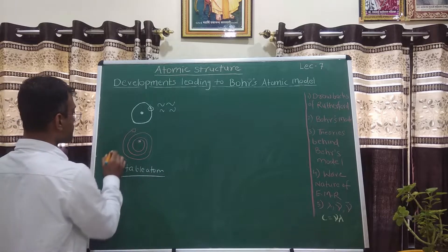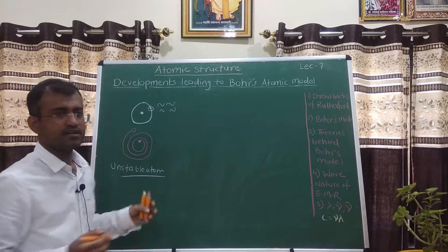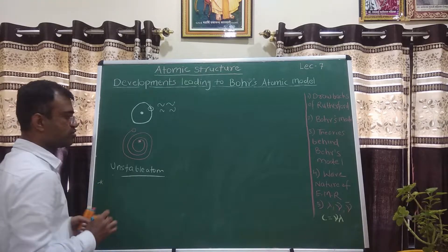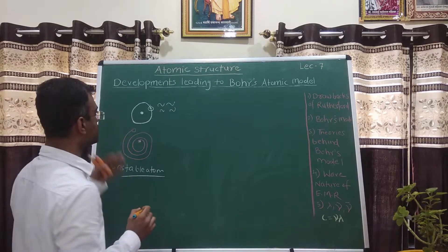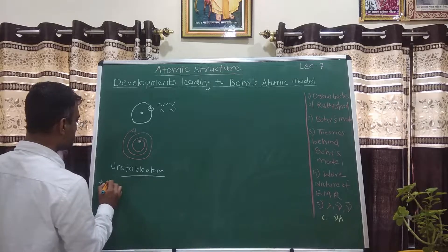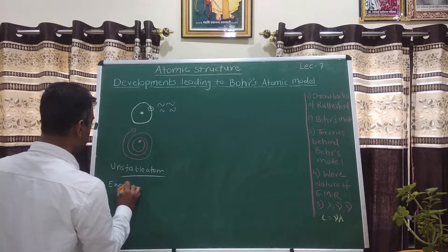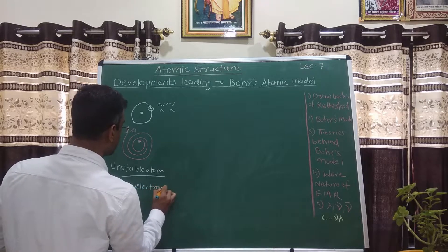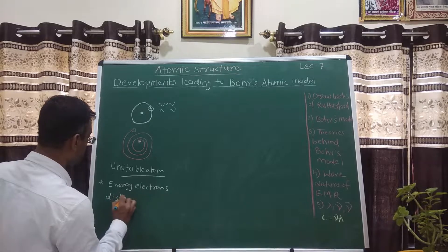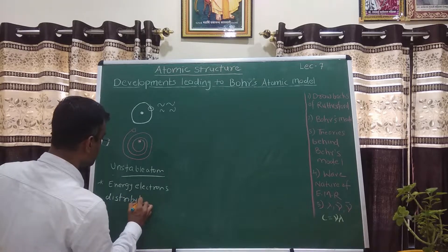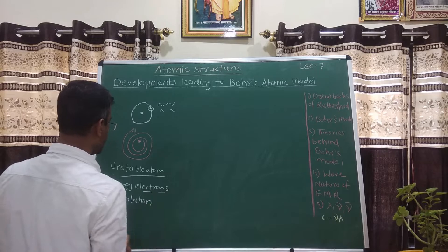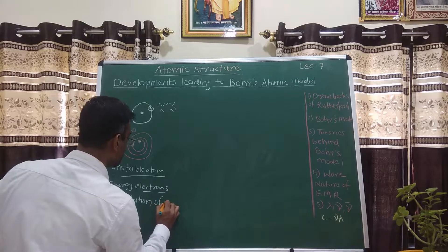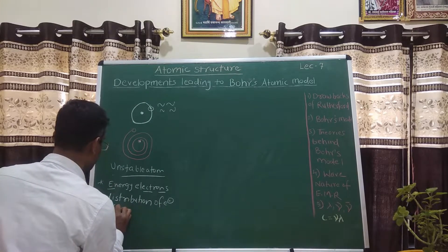Hence, this model couldn't be valid, as was clear from Maxwell's theory. One more issue with Rutherford's model was that he didn't explain anything about the energy of electrons and the distribution of electrons around the nucleus. He failed to explain how electrons are distributed around the nucleus.